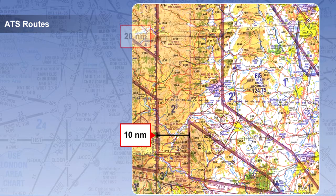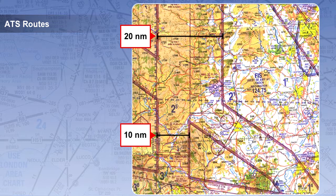When a route is established, a protected area all along it is set up and safe spacing between adjacent routes is established. Airways are normally 10 nautical miles wide, but in areas where that may be navigationally difficult to achieve, they may be 20 nautical miles wide.